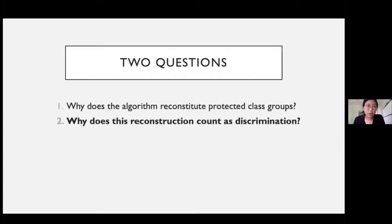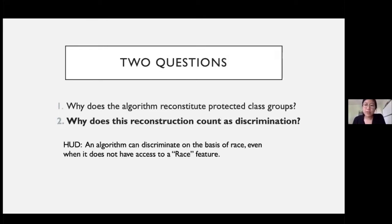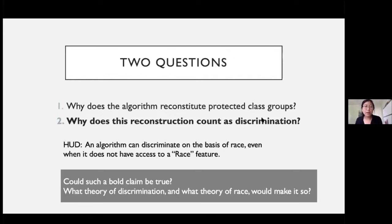The second question is rather interesting: why does this behavior constitute discrimination? This exchange between Facebook and HUD drills down on a critical point of contention in debates about algorithmic discrimination — what does it take for a database system to act on or on the basis of race? HUD proffers a negative proposition: an algorithm can discriminate on the basis of race even when it does not have access to a race feature. My talk will ask: could such a bold claim be true? And in what theory of discrimination, what theory of race, would it be so?